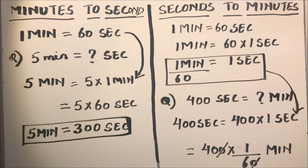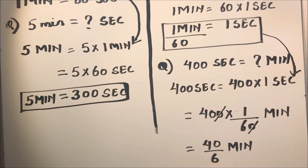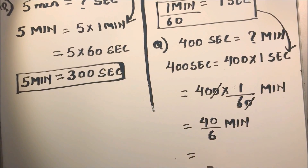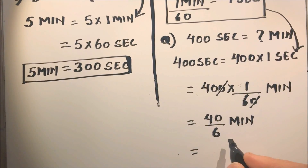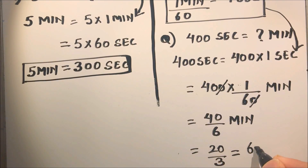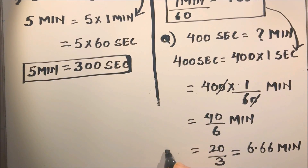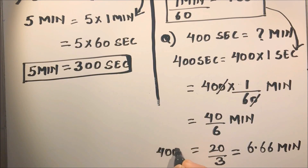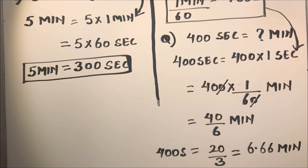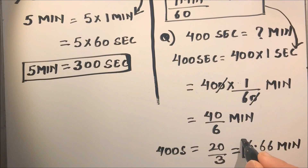Simplifying 400 over 60, we reduce the fraction to 40 over 6, and further to 20 over 3, which equals 6.66 minutes. So 400 seconds is equal to 6.66 minutes.